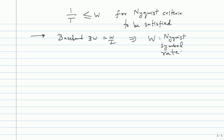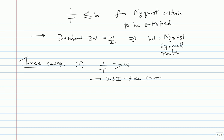The next thing we are going to see: here are three cases inspired by the Nyquist criteria. If 1/T is greater than W, you can quickly conclude ISI-free communication is not possible. What if 1/T equals W — you decide to signal at the maximum possible rate permitted?